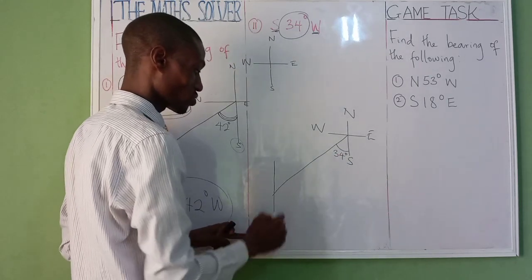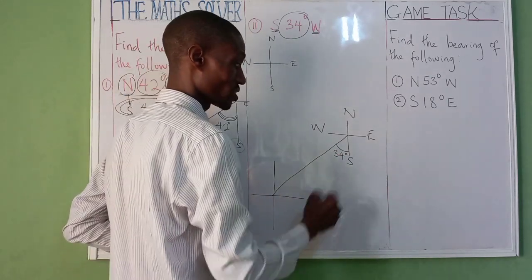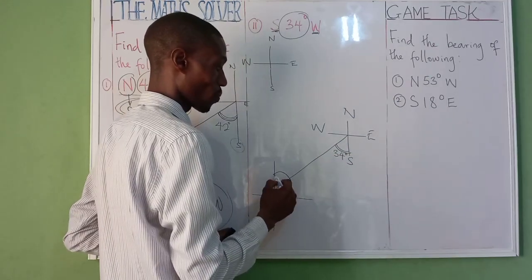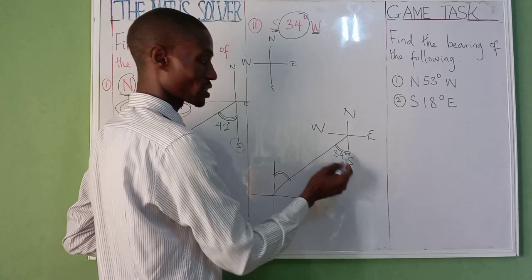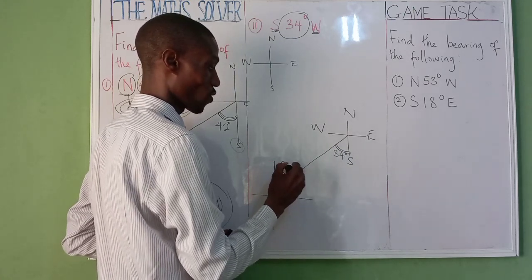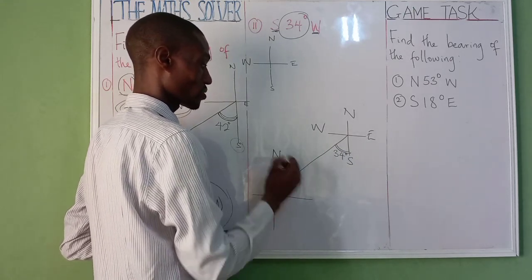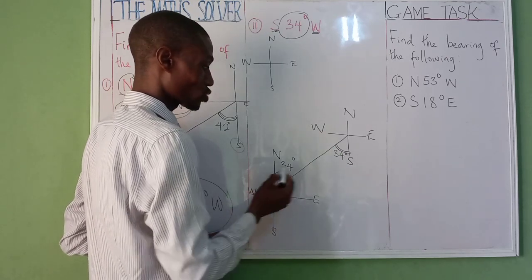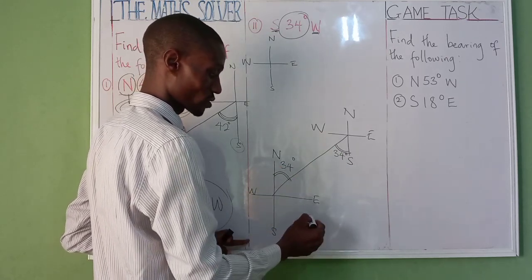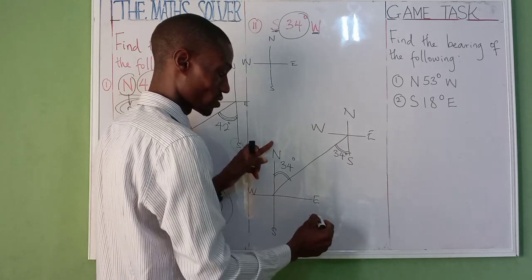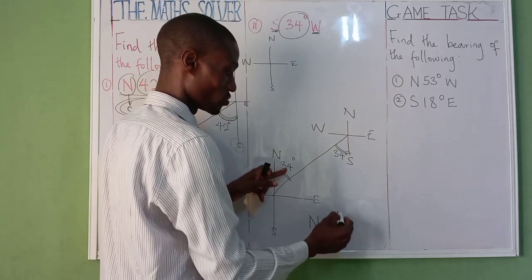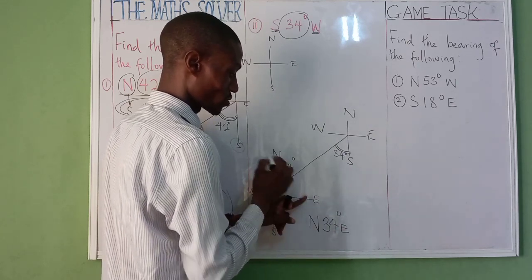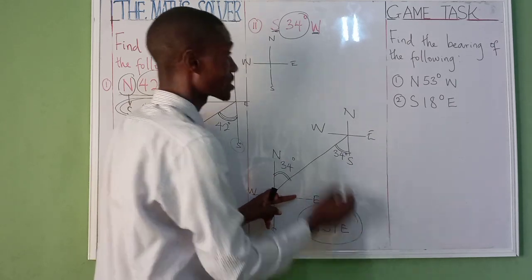Draw another quadrant. This angle is down, and it will be alternate to the one up — down equals up. So as this one is 34, this will also be 34 degrees. Write north, east, south, and west. It's the north that is serving 34, so you write north 34 degree east, because 34 is in between north and east.